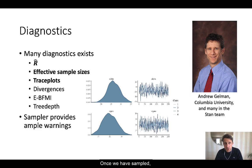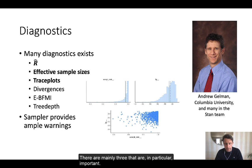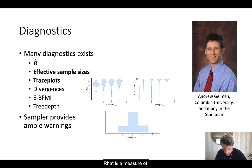Once we have sampled, we have lots of diagnostics at our hand if we use Hamiltonian Monte Carlo. There are mainly three that are in particular important. The first one is R-hat.